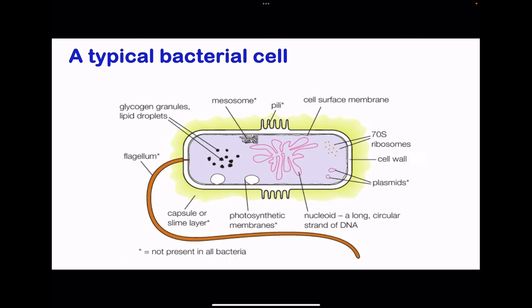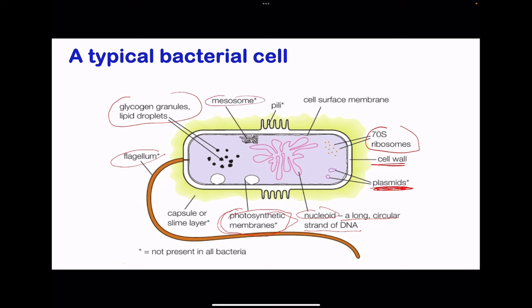Next we go to prokaryotic cells. Here we begin by looking at a typical bacterial cell. It contains a flagellum which allows movement. There are some photosynthetic membranes because some bacteria are photosynthetic. There is a nucleoid, which is a long circular strand of DNA. Some bacteria do have plasmids. Bacteria have cell walls, they have the 70S ribosomes for protein synthesis, glycogen granules, as well as lipid droplets. There is a mesosome, pili, as well as the cell surface membrane.